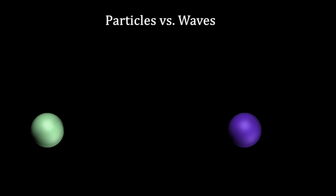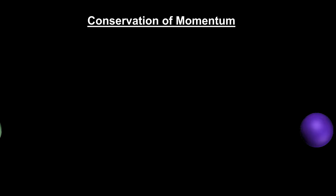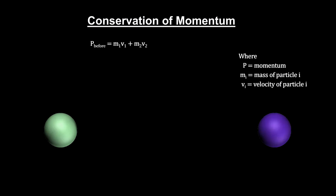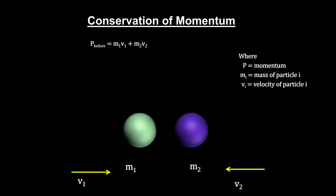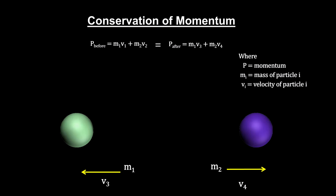Particles are localized and bounce off each other. An important aspect of collisions between particles like these is that the momentum of the system is the same before and after the collision.